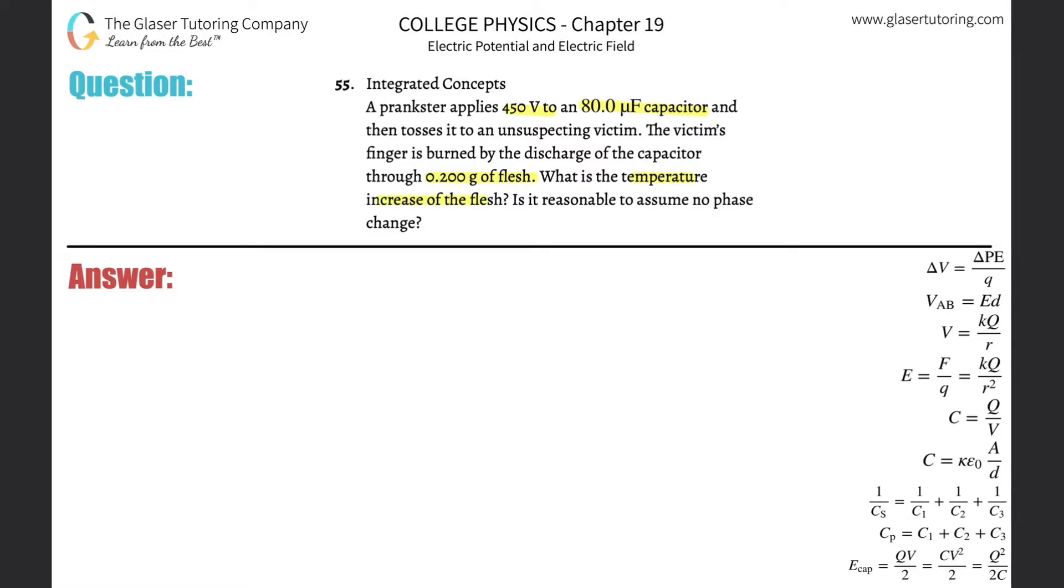So we can reverse engineer this problem. If we need to know the temperature increase of the flesh, most likely we're dealing with some type of calorimetry problem, where we know that the energy needed, now they represented this in the chapters like capital Q, I'm going to write it as E, the energy needed to change the temperature of an object is equal to the mass of the object multiplied by the specific heat multiplied by the change in temperature. Now I'm looking for the change in temperature.